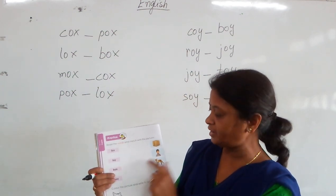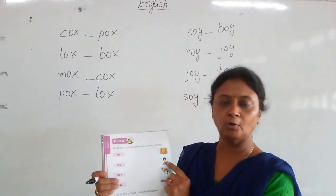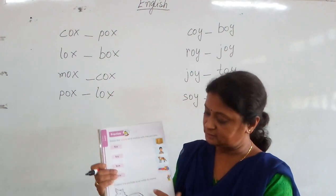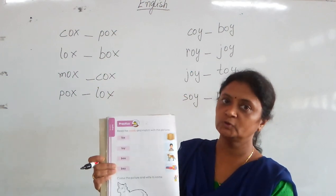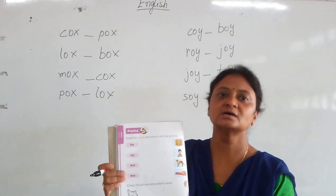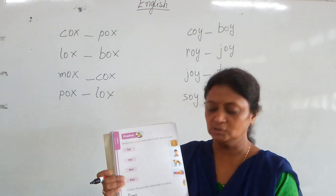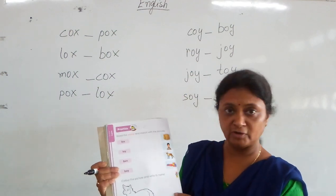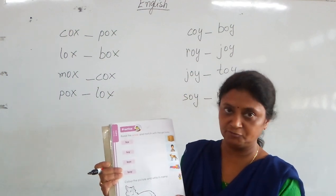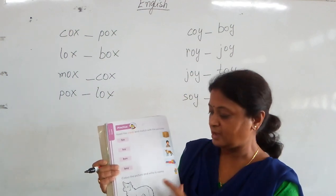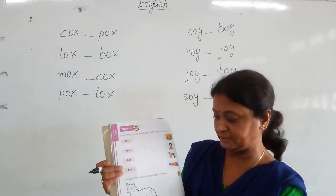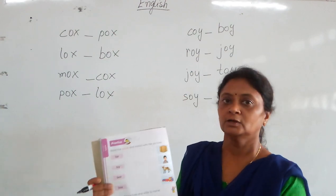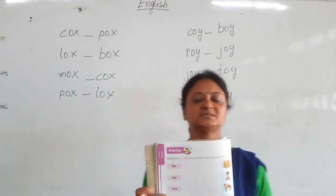And this is Boy. Right? And this — which picture is this? Fox. So you have to write the name of this picture here, of OX: Fox. And color this picture.